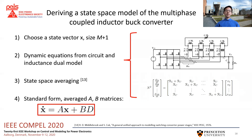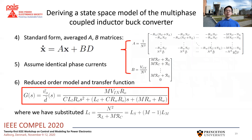We derive a state-space representation. Since we must describe the state variables in terms of first-order derivatives, the matrix formulation of the inductance dual model is suitable. The circuit and coupled inductor are brought together to yield a dynamic system for every set of switch positions, and these are combined over a full switching cycle using state-space averaging. We then write the system in standard form with averaged A and B matrices. In the symmetric system, the phase current perturbations will be equal, reducing the system order to just the output voltage and total current. We present the transfer function in terms of leakage inductance LL, which is more compact and familiar to designers.